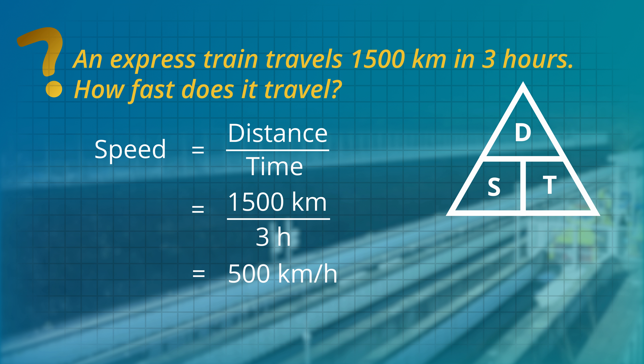Now let's do an example to find the time at a snail's pace. A snail moves 80 millimeters at a speed of 10 millimeters per second. How long does this take? From the DST triangle the rule is time equals distance divided by speed. That's a distance of 80 millimeters divided by a speed of 10 millimeters per second. That gives a time of eight seconds for the snail to slime across my foot.